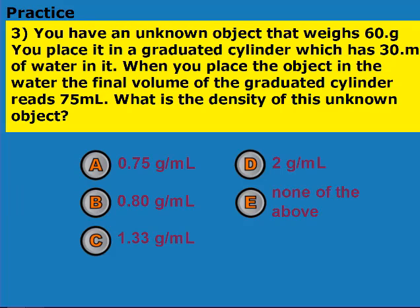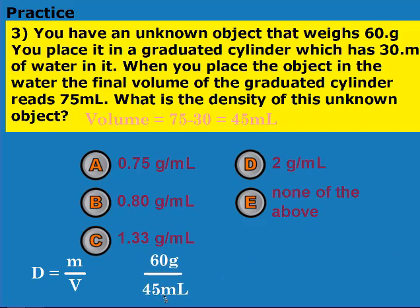One more problem. On this problem, we have density is equal to mass over volume, and we're trying to find what the density is. So I need to know the mass and I need to know the volume. They didn't give you the volume — they gave you some lab data. They said originally it was 30, then you placed the object into the water and now it's 75. So the volume of the unknown object is the difference in volume, because that difference has to be due to the object. They gave you the mass, so it's just 60 grams over 45 milliliters. None of my units are canceling, so I just put them on top of each other, giving you 1.33 grams per milliliter. With proper sig figs, that should be 1.3.